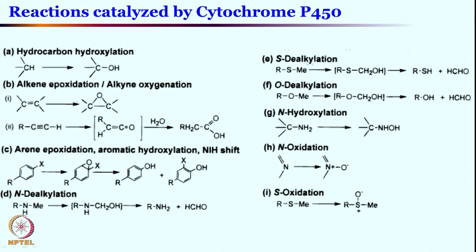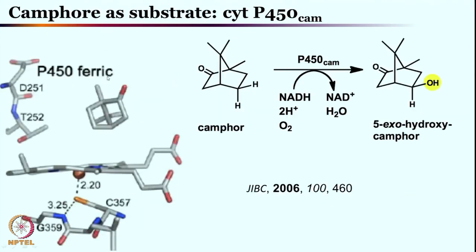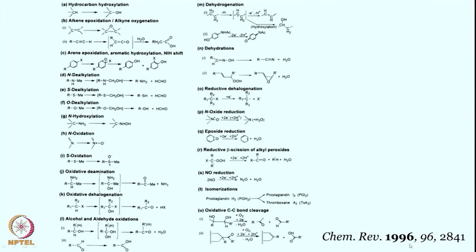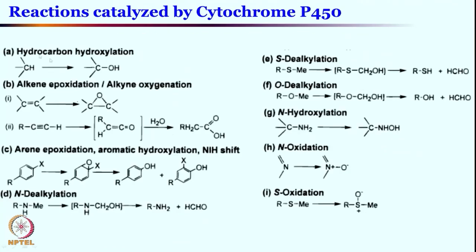Looking at the types of reactions from a 1996 Chemical Reviews article: a C-H bond of an aliphatic substrate can react to give C-OH — aliphatic substrate hydroxylation. This is one of the easier-to-understand reactions, where hydrogen atom abstraction occurs at the iron center and the iron(IV)-hydroxo species that is generated undergoes rebound to give the C-hydroxylation product.